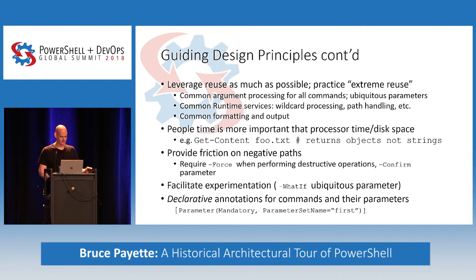Reuse is super important. We wanted to leverage reuse as much as possible — sort of extreme reuse. So, common argument processing for all commands, ubiquitous parameters, common runtime services like how wildcards are processed and how paths are resolved. All those services are made available by the PowerShell runtime to people writing cmdlets or scripts. Common formatting and outputting — nobody has to write formatting code in their cmdlet; we take care of that.